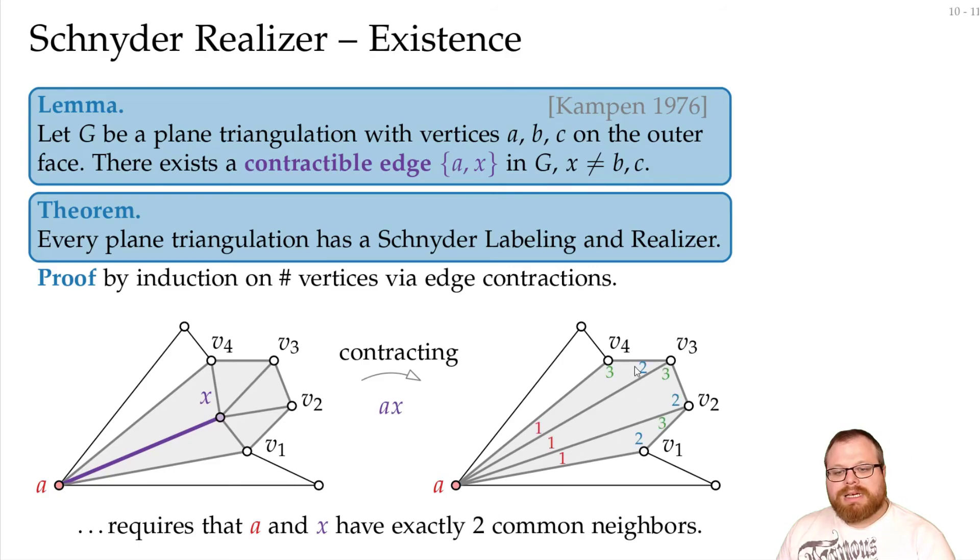So when we go downwards towards just a triangle, then it's very easy to get a labeling. We just put 1 to 3 there, and we're done. And now we have to show that if we contract an edge, and we want to expand it again, that we can extend the labeling we have. So let's say we have our labeling here. This is our vertex A, so all the labels here have to be a 1. And here we must have, in counterclockwise order, 2, 3, 2, 3, 2, 3. So all the labels here are fixed. There is no choice here. Now if we expand to this, we still want to have something valid. How can we do that?